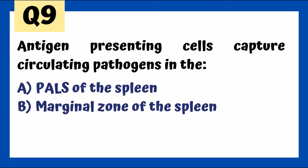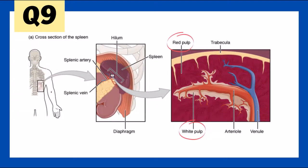Antigen presenting cells capture circulating pathogens in the marginal zone of the spleen — between the red pulp and the white pulp. Some sources indicate the marginal zone is part of the red pulp. Antigen presenting cells capture circulating pathogens for recognition by lymphocytes in this location. PALs contain the T-cells.